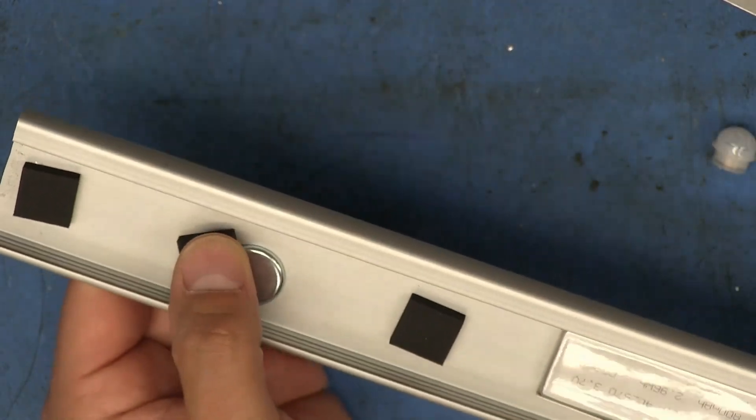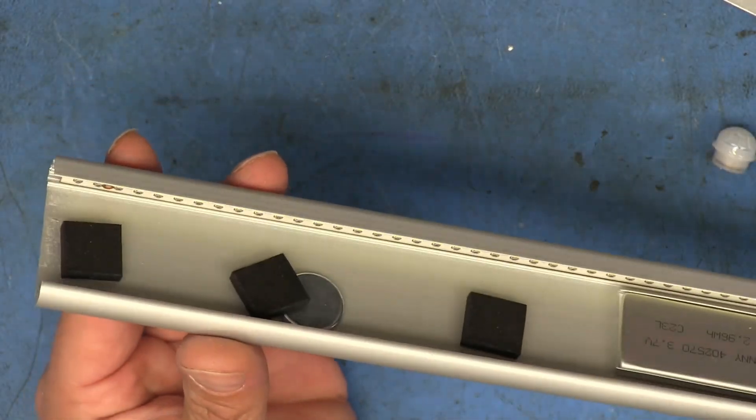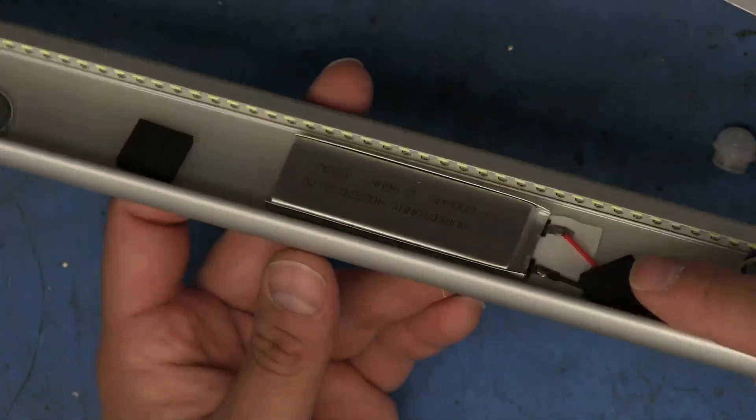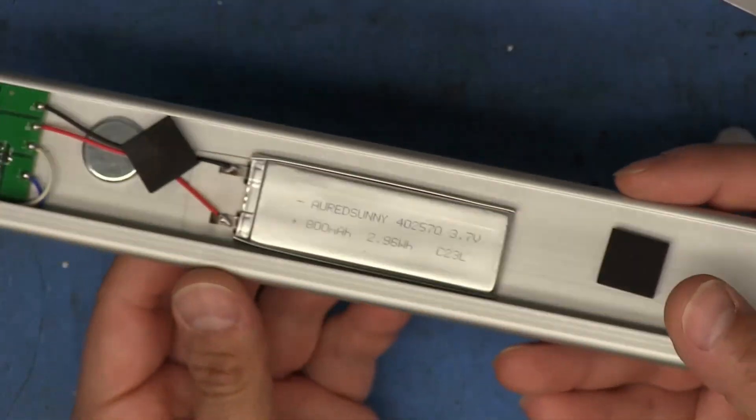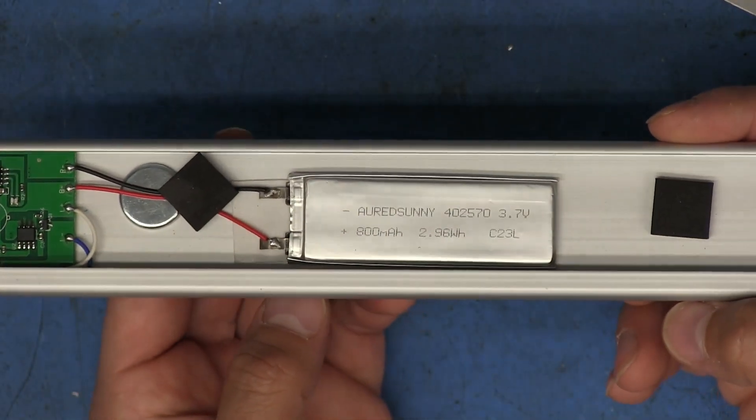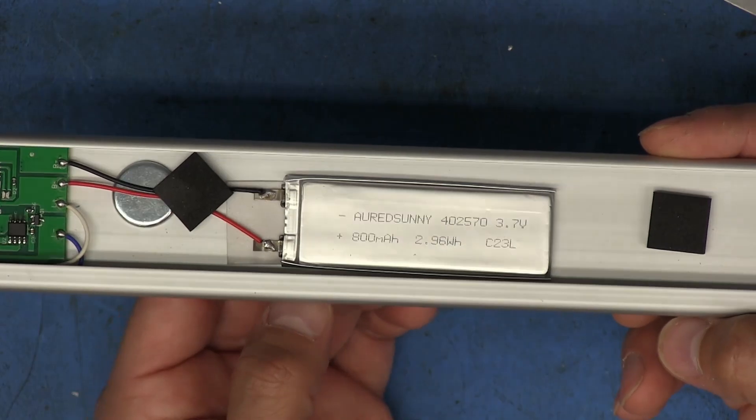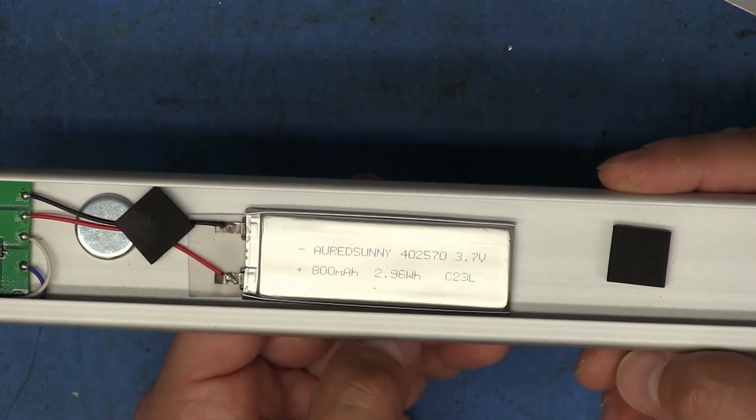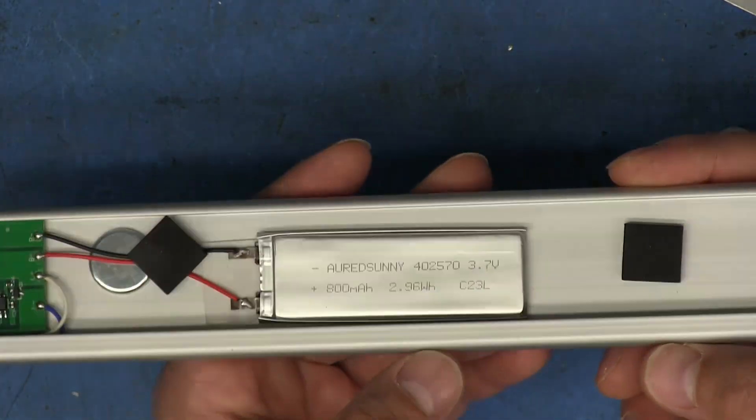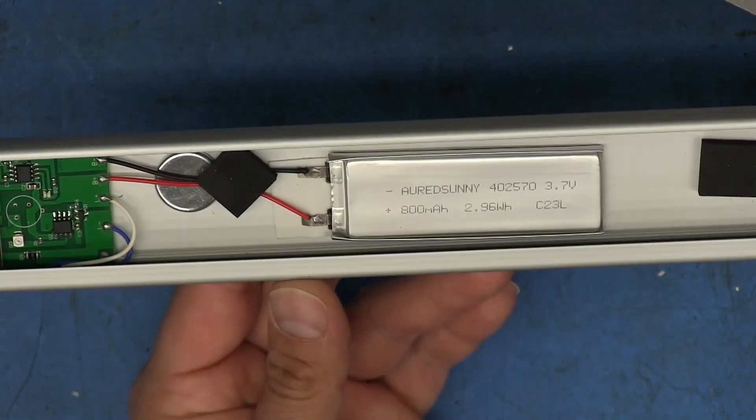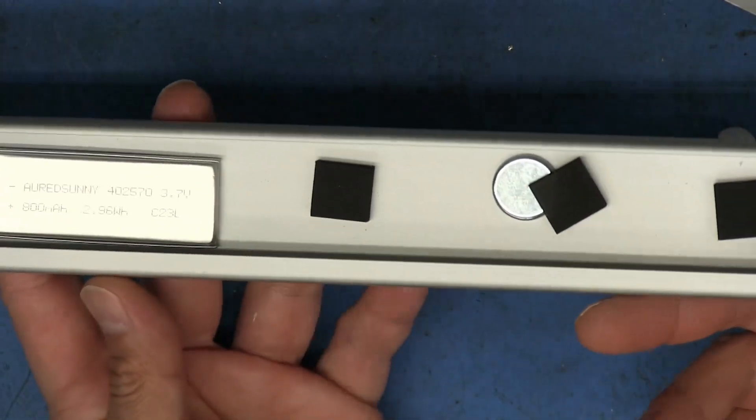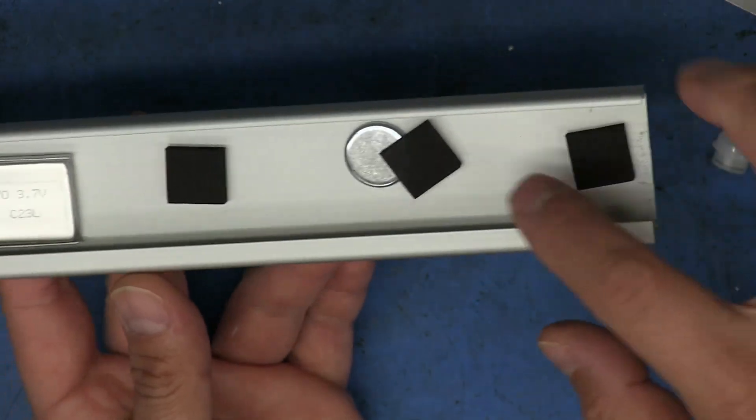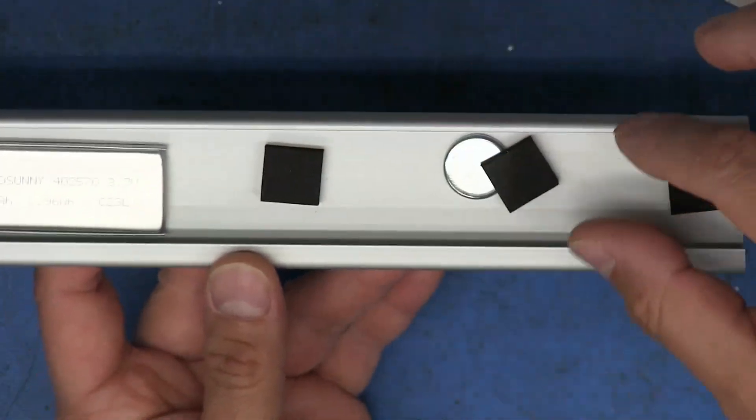So they've got these little foam pads spread out right there to provide some support. There's one of the magnets. There's the other magnet. And there is the battery. So that does claim to be an 800 milliamp battery, Red Sunny branded apparently, never heard of that brand. So I guess technically that could be upgraded. If you really wanted to modify one of these maybe even move this magnet off to the side or something, or put maybe one over here, one over here, put another battery right there.